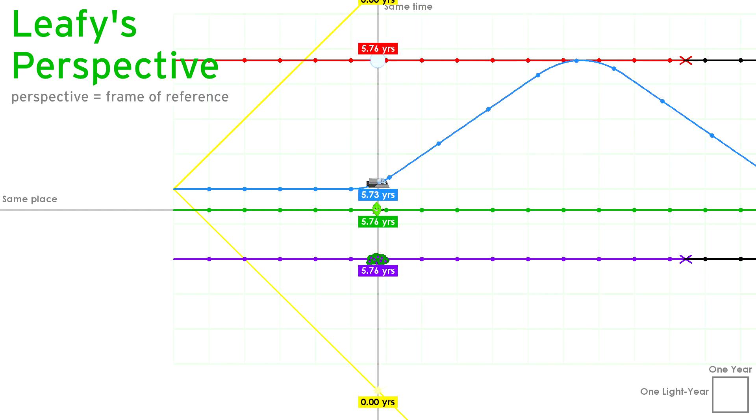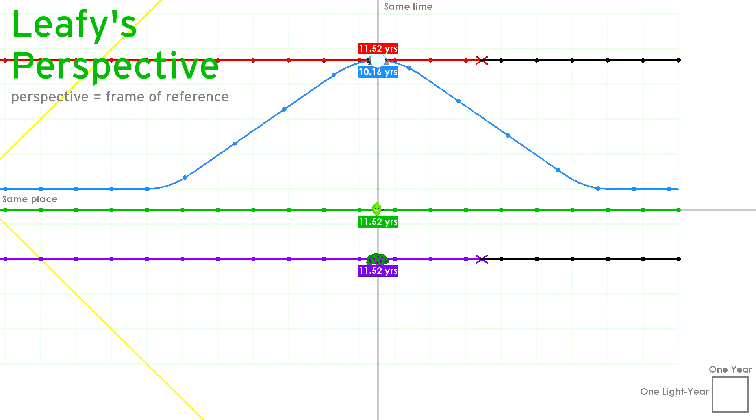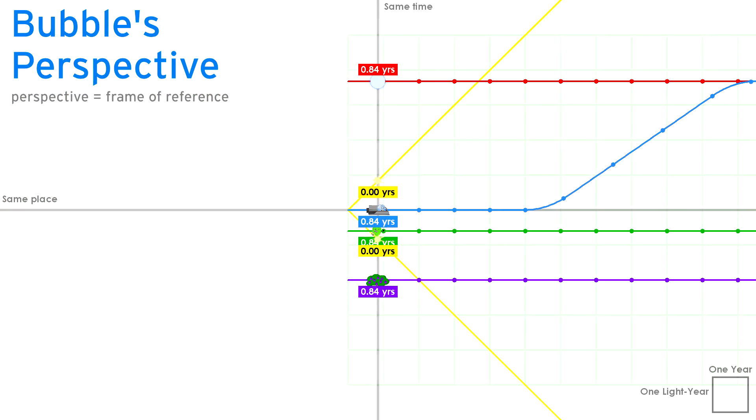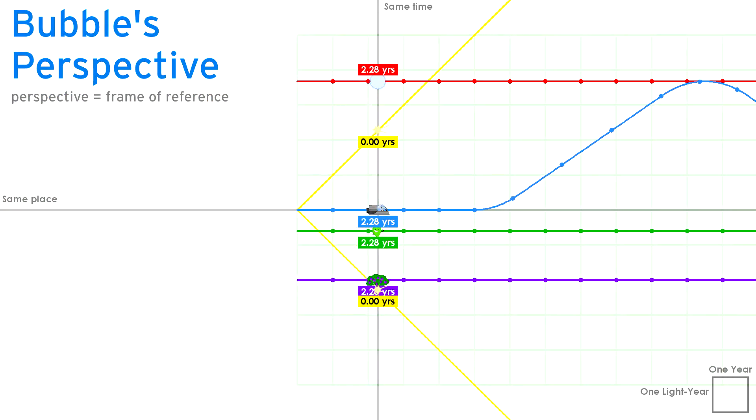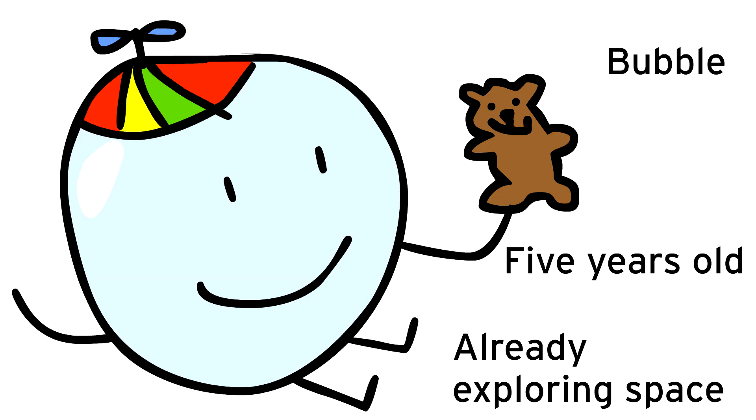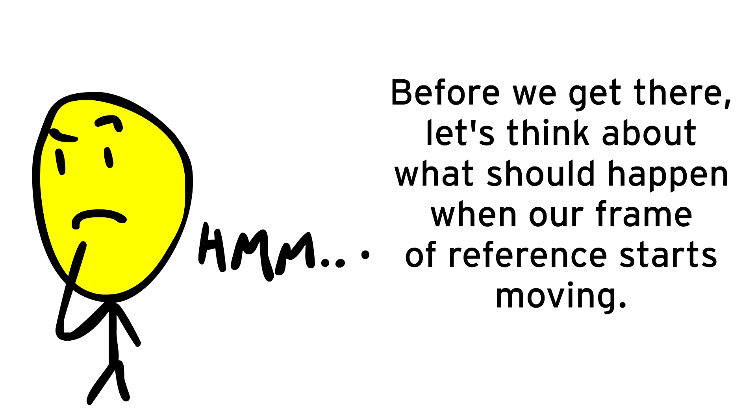The story from Leafy's perspective is pretty boring. Leafy doesn't move, so everything happens exactly as we expect. Let's switch to Bubble's perspective now. For the first five years, everything is the same. But then, Bubble starts moving north. She's an early adventurer.